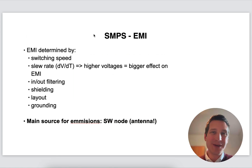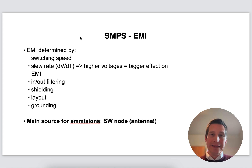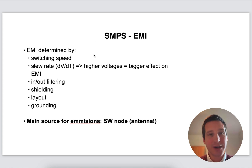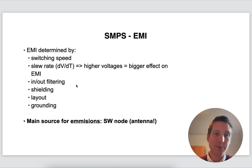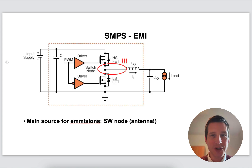Now if you think in terms of EMI — electromagnetic interference — in a switched mode power supply, if you have a PCB or a system architecture, typically the switched mode power supply will be the highest source of EMI. Within that switched mode power system, we need to look at the main sources. EMI is determined by switching speeds — switching quicker will produce higher EMI. A very important factor is also the slew rate; higher voltages will have a big effect there. Input and output filtering, shielding, layout, and grounding all matter, but the main source of emissions is basically your switching node.